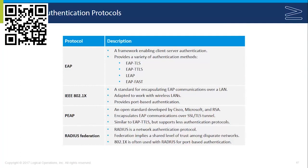Some of the most common EAP types are EAP-TLS, in which the client uses a mandatory client-side certificate to authenticate; EAP-TTLS, or Tunneled Transport Layer Security, which uses a client-side certificate but it is not mandated. Lightweight EAP is Cisco's proprietary EAP implementation, and EAP-FAST — Flexible Authentication via Secure Tunneling — is meant to replace Lightweight EAP. Both of those latter two are Cisco-only protocols.